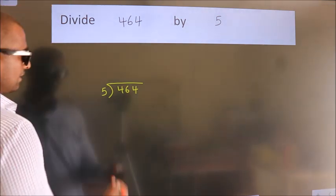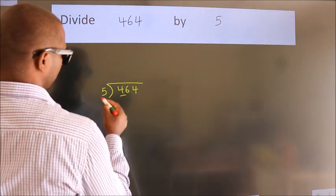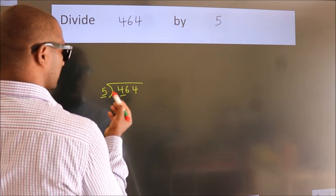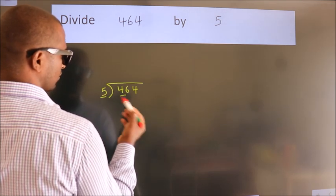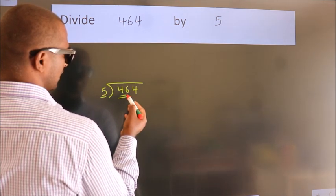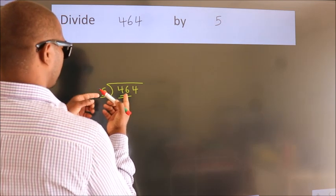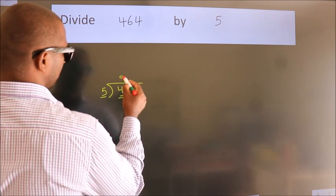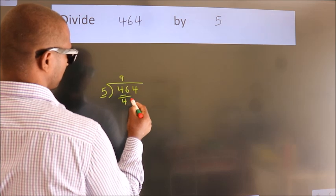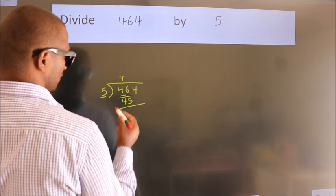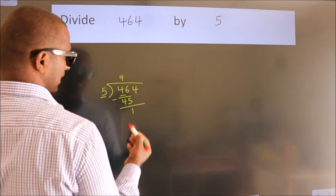Next, here we have 4, here 5. 4 smaller than 5. So we should take two numbers, 46. A number close to 46 in 5 table is 5 nines, 45. Now we should subtract. We get 1.